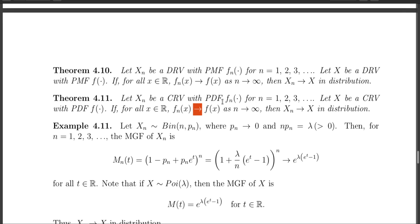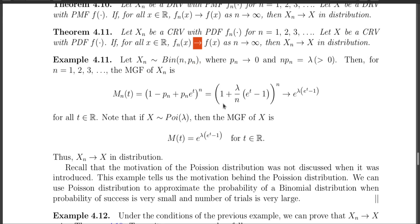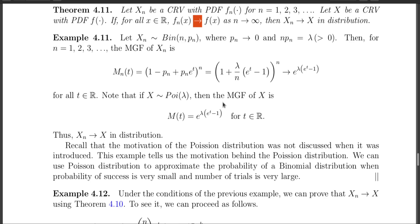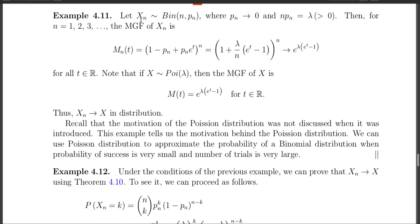Let us use these theorems on some examples. The first example: Xn is a random variable having binomial distribution with parameters n and pn. So X1 has distribution Binomial(1, p1), X2 has Binomial(2, p2), X3 has Binomial(3, p3), and so on.